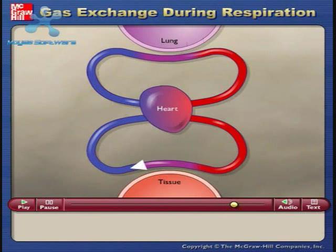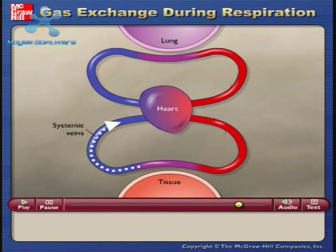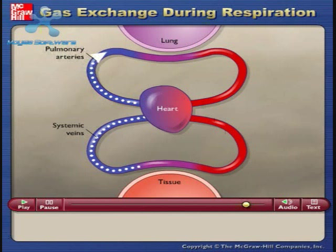Oxygen-poor blood is carried through systemic veins back to the heart and is pumped through pulmonary arteries to the lungs, where gas exchange again replenishes the blood with oxygen and removes carbon dioxide.